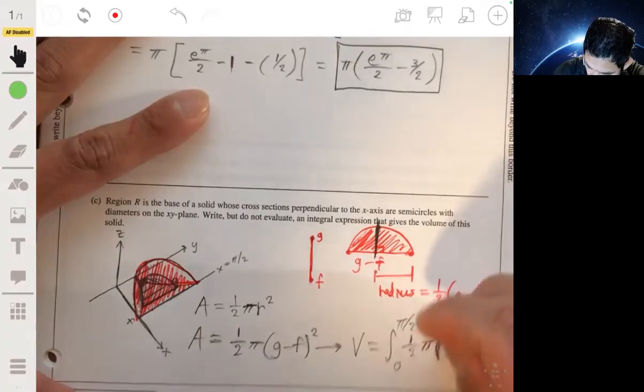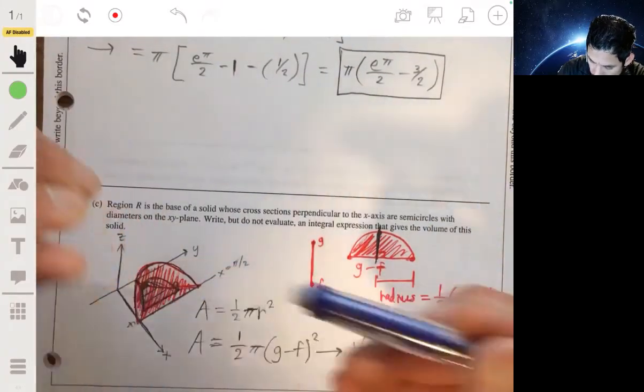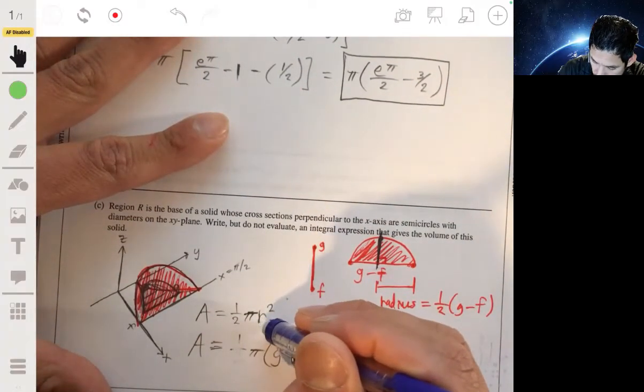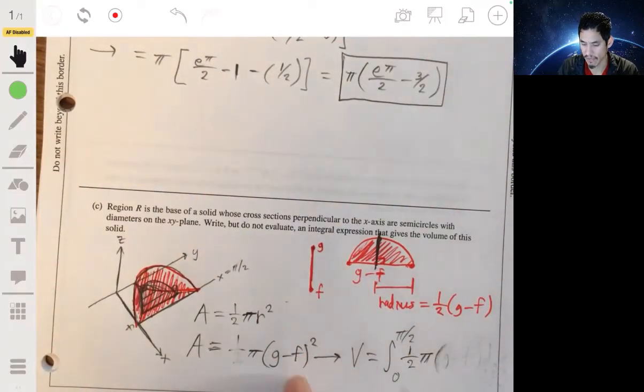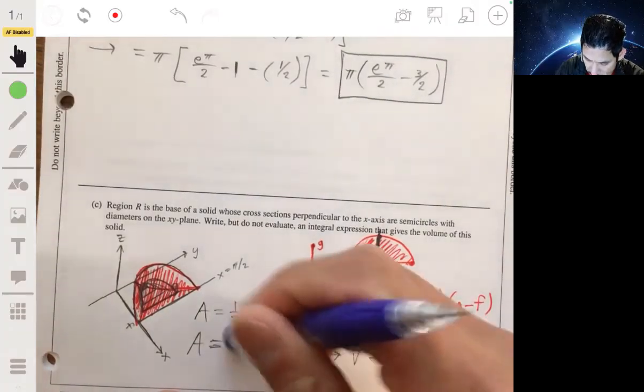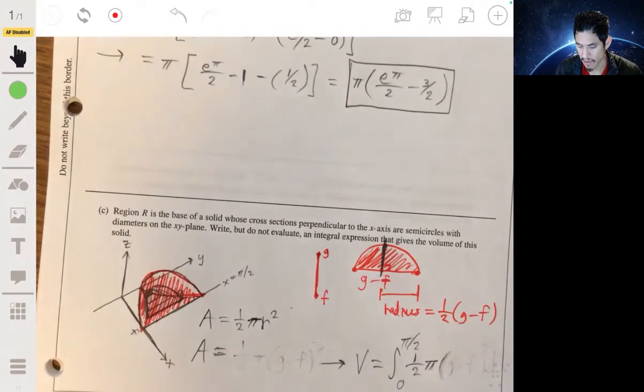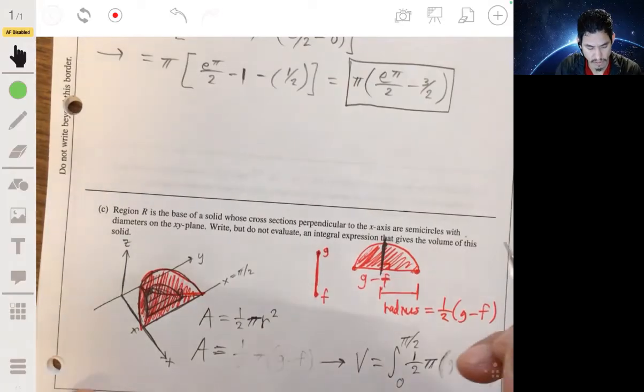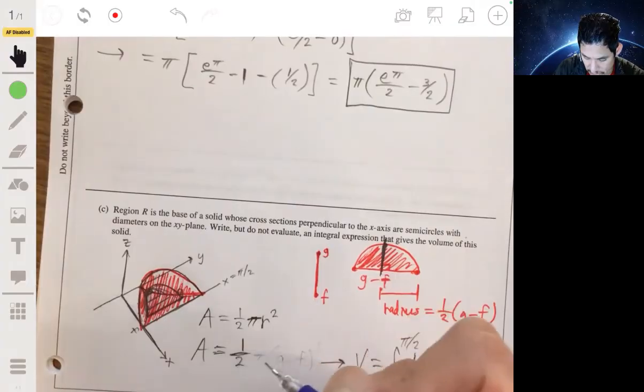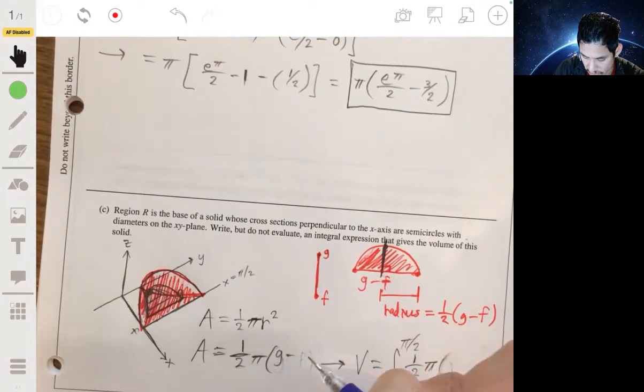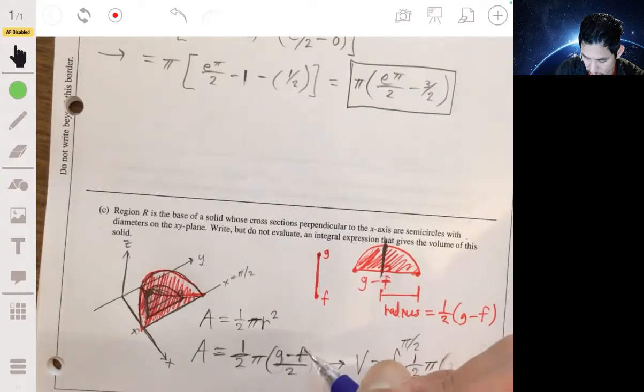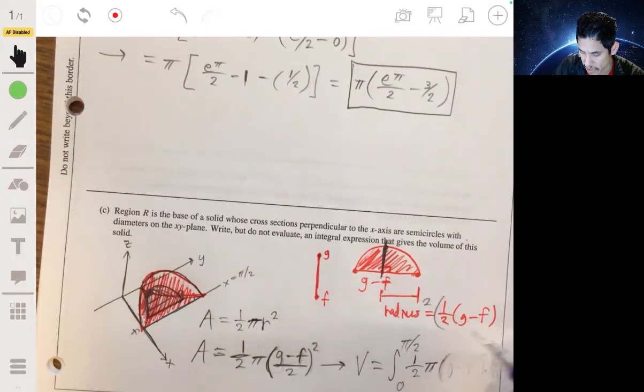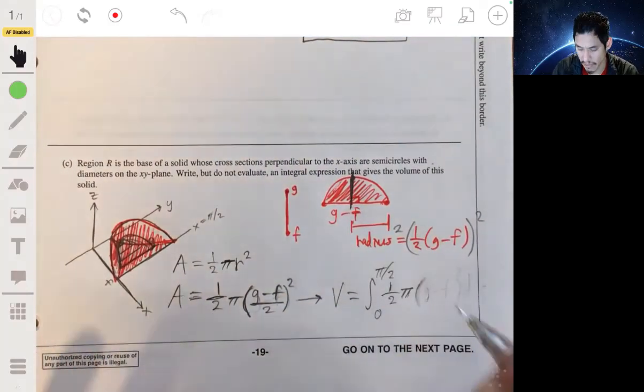And actually I just caught a mistake, luckily. So the one half—the radius is one half of this. So I gotta put this—let me rewrite this. Actually no, I kind of did that wrong. So G minus F, I gotta make sure I put the one half inside this squared part, because that's what's being squared. So the radius squared would be this whole quantity squared.